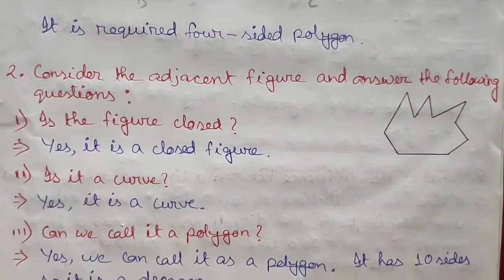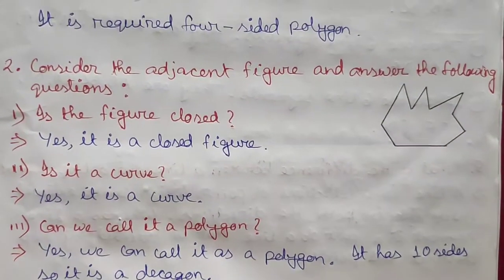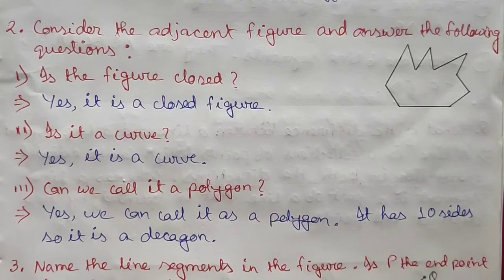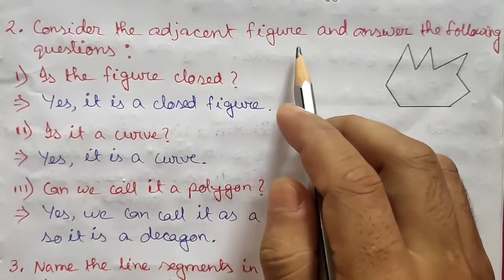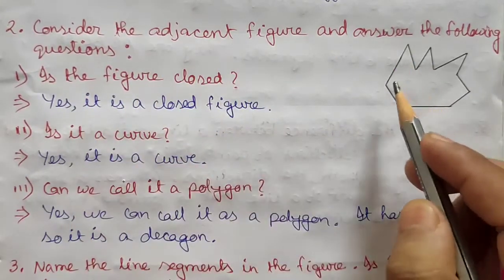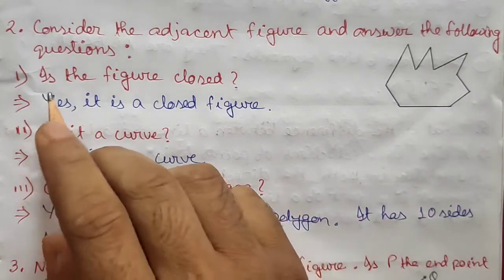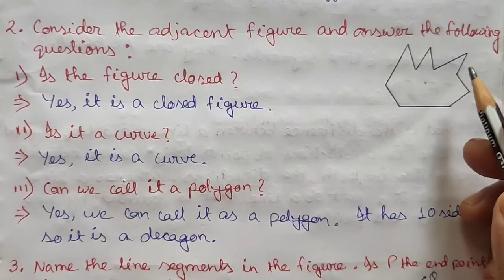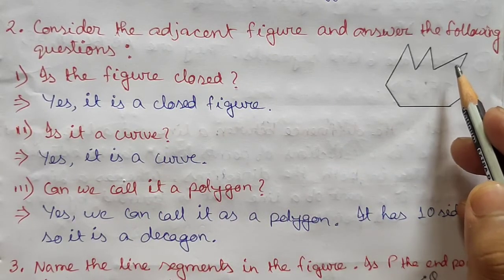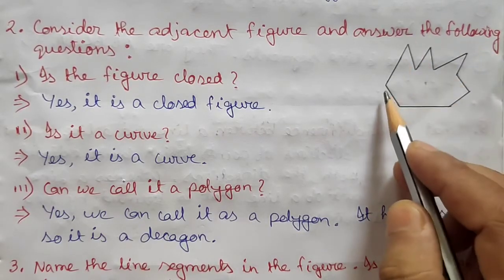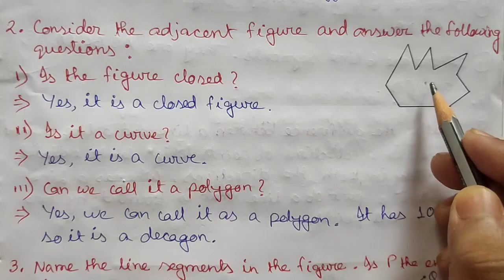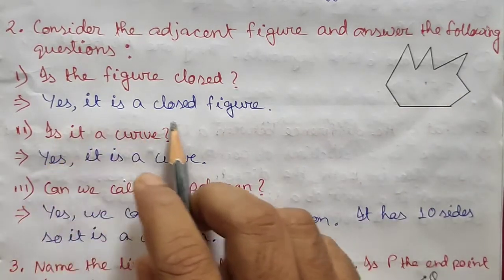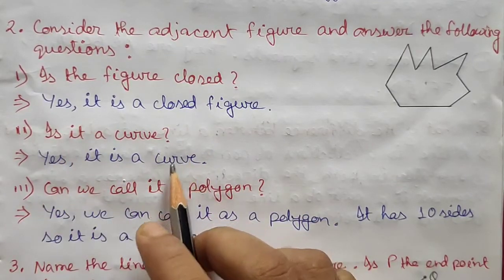The second question says: consider the adjacent figure and answer the following questions. The first sub-question is: is the figure closed? A closed figure has the same starting and ending point, and this figure has no opening, so yes, it is a closed figure.